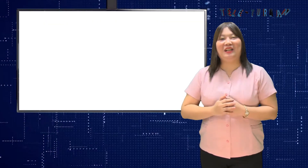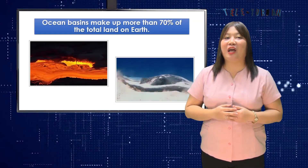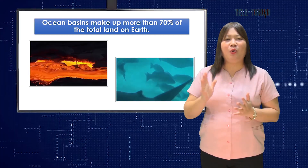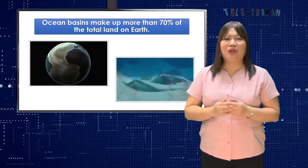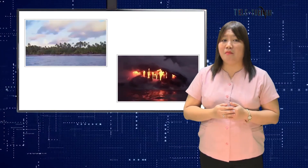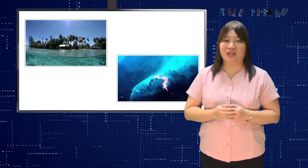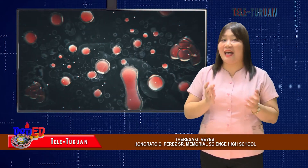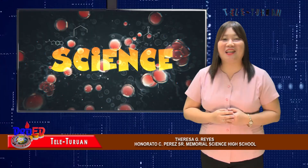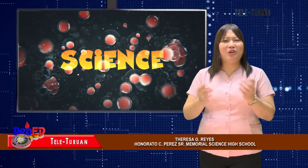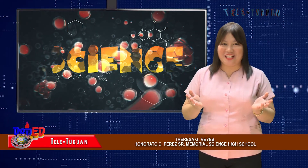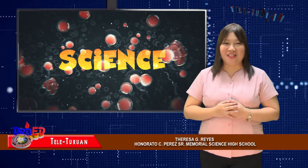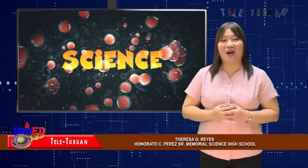There you have it! The structure of ocean basins and stages of their evolution give us the idea that ocean basins make up more than 70% of the total surface on Earth. According to researchers, the Atlantic Basin has been the most active area of oceanic crust creation over the past 200 million years. I hope you have become fascinated with the structure and evolution of ocean basins, just like oceanographers or marine geologists who continually unravel and explore the world ocean. I am Teresa G. Reyes, your Earth Science teacher here at Deped Hour Teleturoan.